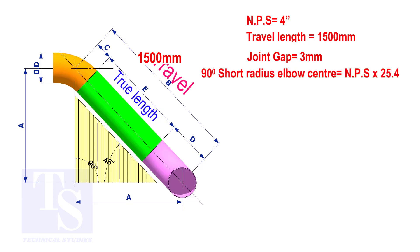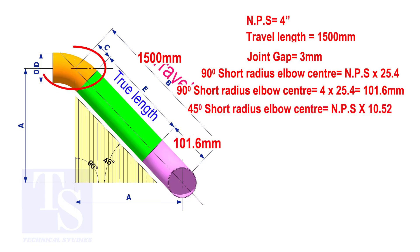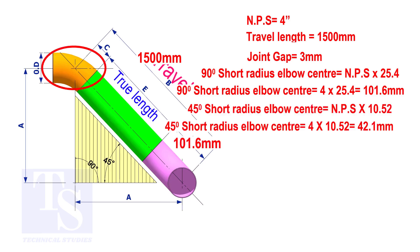To calculate the elbow center of a 90 degree short radius elbow, multiply the nominal pipe size by 25.4. The answer is 101.6 millimeters. To calculate the elbow center of a 45 degree short radius elbow, multiply the nominal pipe size by 10.52. The answer is 42.1 millimeters.